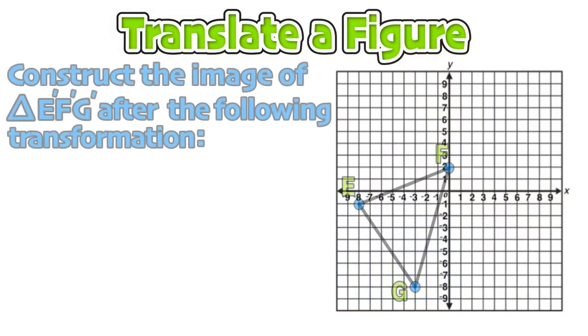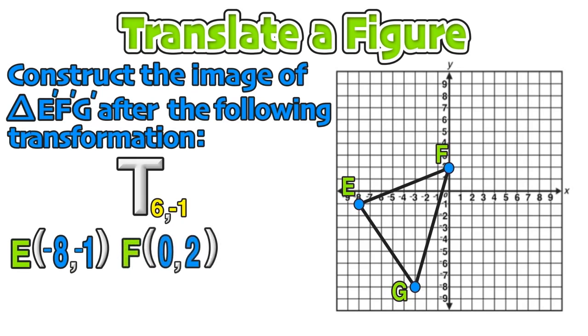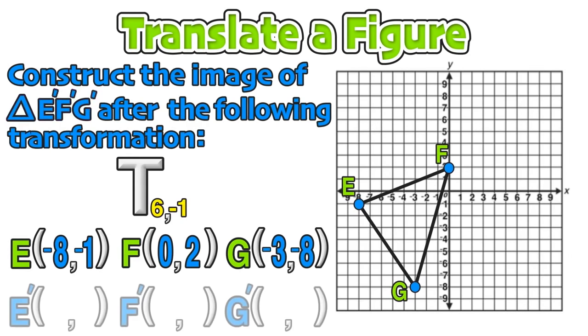For our last example, we are going to construct the image of triangle E prime F prime G prime after the following transformation. We'll start off by writing down the coordinates of the vertices of triangle EFG to find the coordinates of E prime, F prime, and G prime.